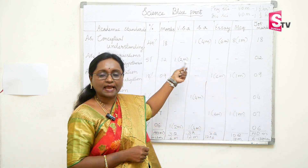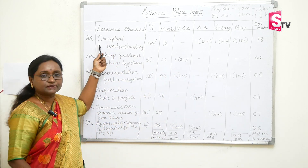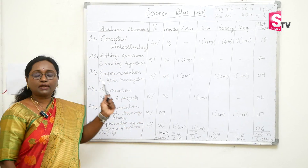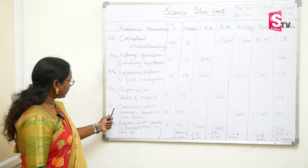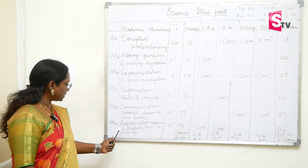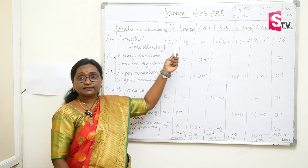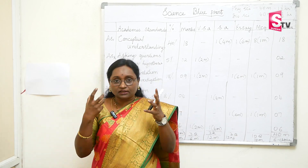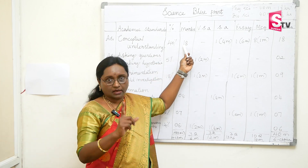The academic standards on which the paper is prepared are: first, conceptual understanding; second, asking questions and making hypothesis; third, experimentation and field investigation; fourth, information skills and projects; fifth, communication through drawing and flowcharts; sixth, appreciation and concern for biodiversity and application to daily life. Conceptual understanding is totally for 18 marks.